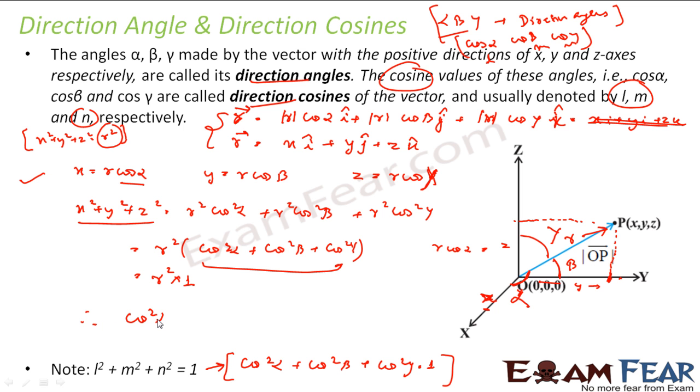Therefore, cos square alpha plus cos square beta plus cos square gamma is equal to 1 and that is what I was supposed to prove. So please note we have two equations. One is if my point P is x, y, z, x square plus y square plus z square is equal to r square. And we talk about direction cosines, cos square alpha, cos square beta plus cos square gamma is equal to 1. Sum of the squares of direction cosines is 1.